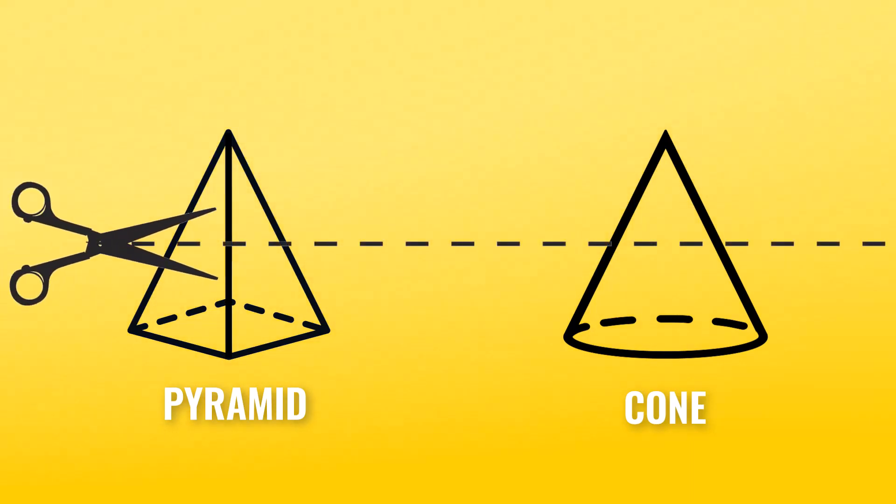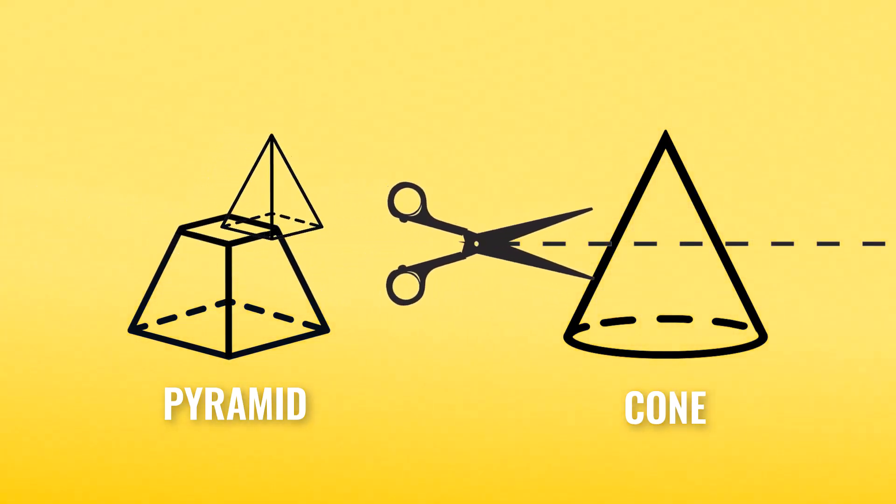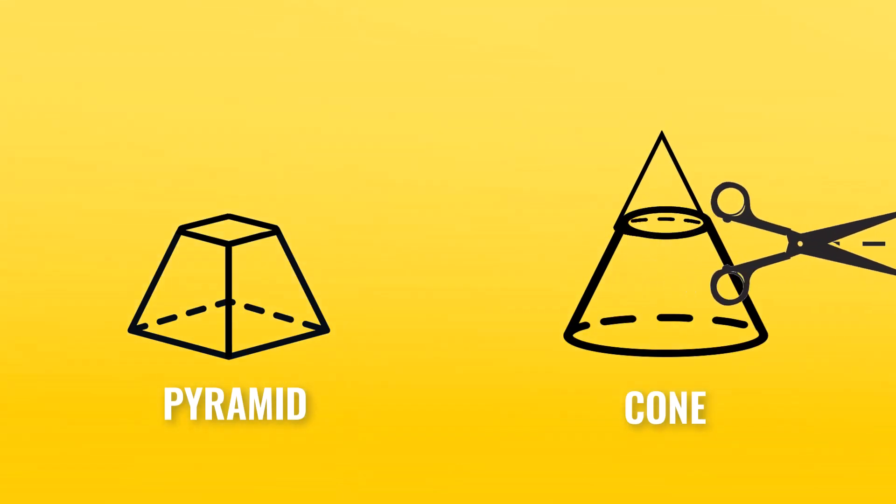A frustum is simply a geometric shape formed by cutting the top off of a pyramid or a cone parallel to its base.